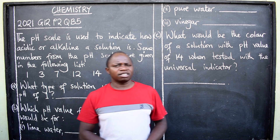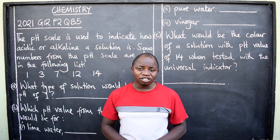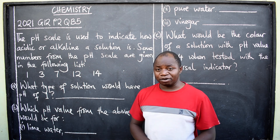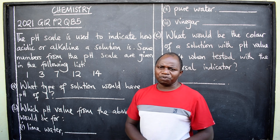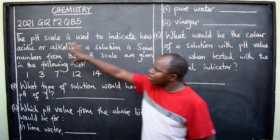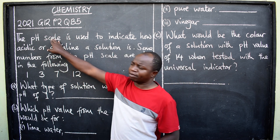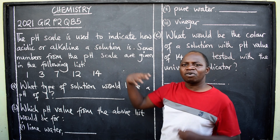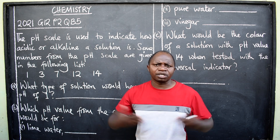The question, ladies and gentlemen, is coming from a topic called acids, bases, and salts. We want to understand how to go about it. Please pay attention. The first thing we want to know is the pH scale — what is this scale? From the information that has been provided, it is very easy to understand. The pH scale is a measure or a scale that indicates how acidic or alkaline a substance or solution is.